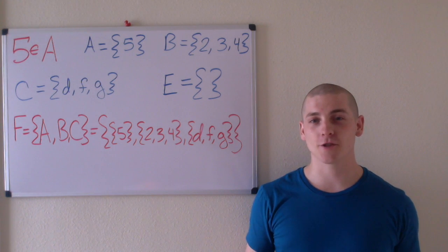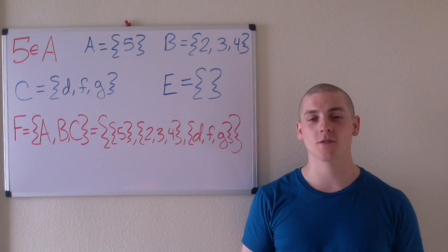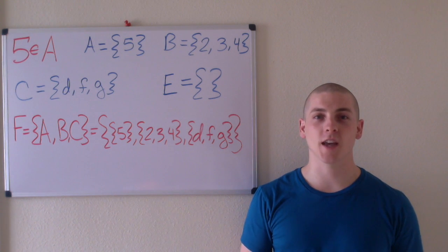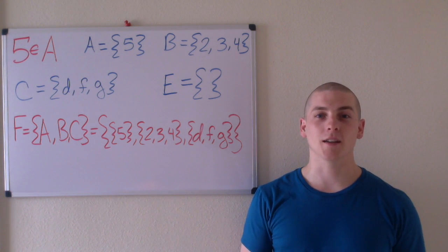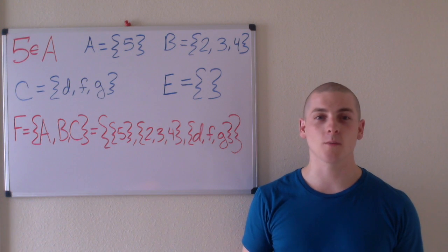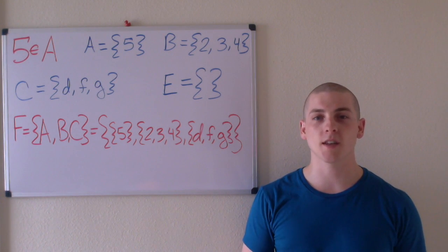A set is a collection of distinct objects called elements or members. An element is essentially anything you want it to be, and for example, elements could be numbers, letters, variables, more sets, or nothing at all.